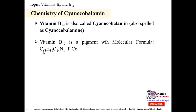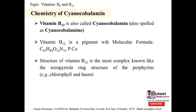Vitamin B12 is a pigment with molecular formula C63 H88 O14 N14 PCo. It is a very complex structure having 63 carbons, 88 hydrogens, 14 oxygens, 14 nitrogens, plus phosphorus. A very unique feature is that it contains cobalt in its structure — B12 is the most complex vitamin known.